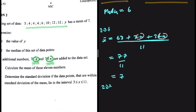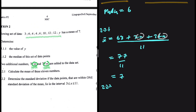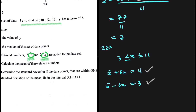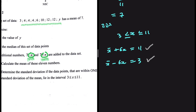For 2.2.2, we need to determine the standard deviation, given that the data points within one standard deviation of the mean lie in the interval 3 ≤ X ≤ 11. This means X bar plus standard deviation equals 11, and X bar minus standard deviation equals 3. Using the second equation: we know X bar is 7, so 7 minus the standard deviation equals 3. It's easy to see that the standard deviation is equal to 4.